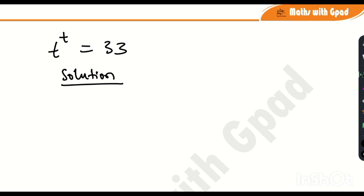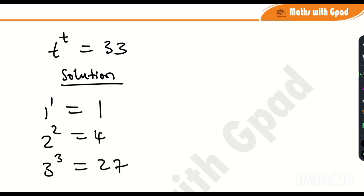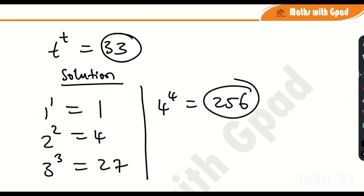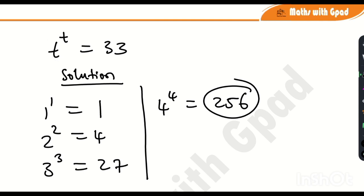This is very interesting. Let's try some integers raised to the power of themselves. 1^1 = 1, 2^2 = 4, 3^3 = 27, and 4^4 = 4×4×4×4 = 256, which is way more than 33. This tells us that the value of t lies between 3 and 4, since 3^3 = 27 (less than 33) and 4^4 = 256 (more than 33).